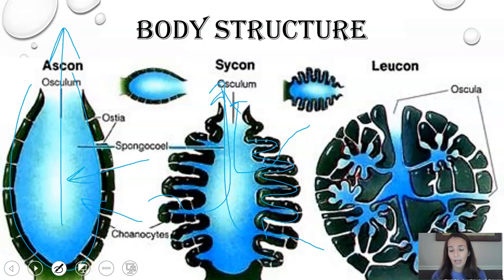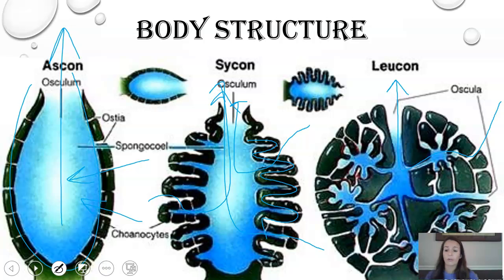Leucon is the most complex body form, and actually the majority of sponges are the Leucon body form. It is very complex compared to the other two. Anytime you see an opening, that's where water comes in and then goes out the osculum. This particular Leucon sponge actually has two oscula — called oscula because there are two openings — so water can come in any of these pores on the side and exit through the openings.